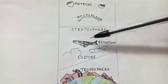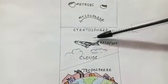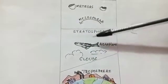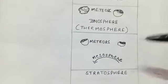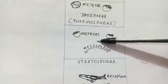Stratosphere also contains ozone. We know ozone absorbs harmful ultraviolet radiations of the sun. The next layer is mesosphere. This layer lies just above the stratosphere.